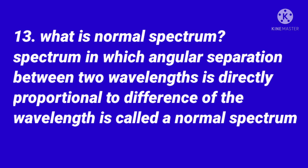What is a normal spectrum? A spectrum in which the angular separation between two wavelengths is directly proportional to the difference of the wavelengths is called a normal spectrum.